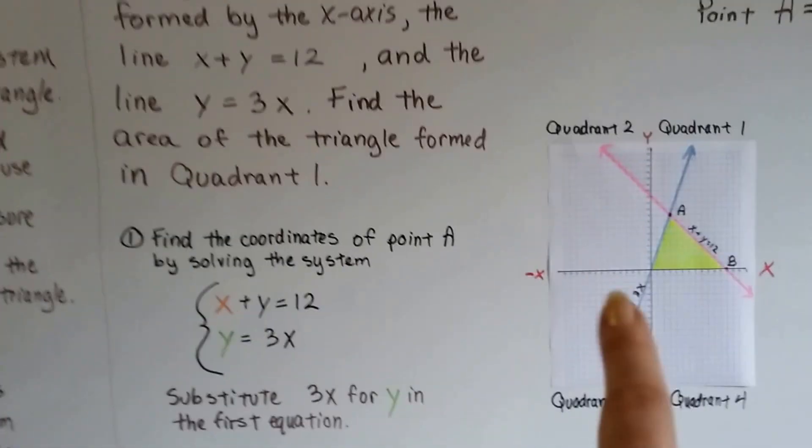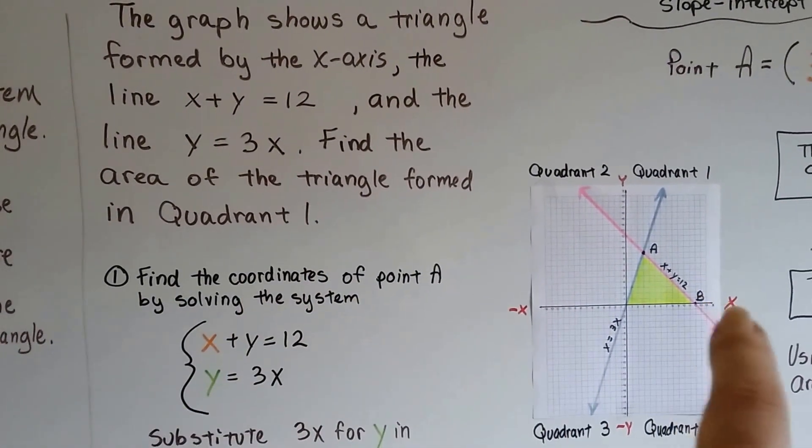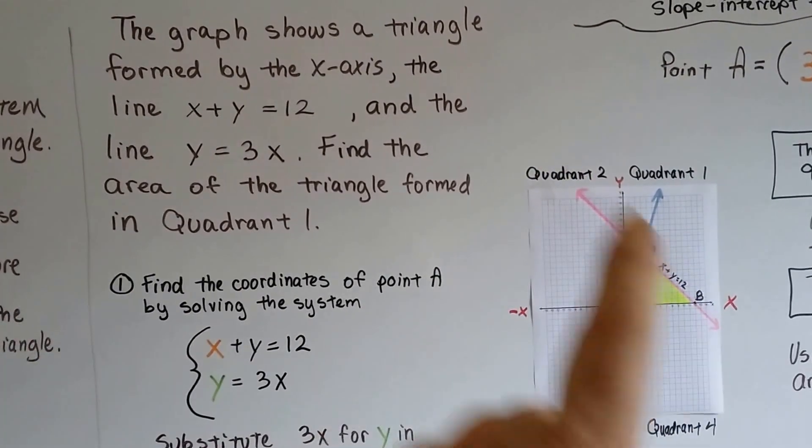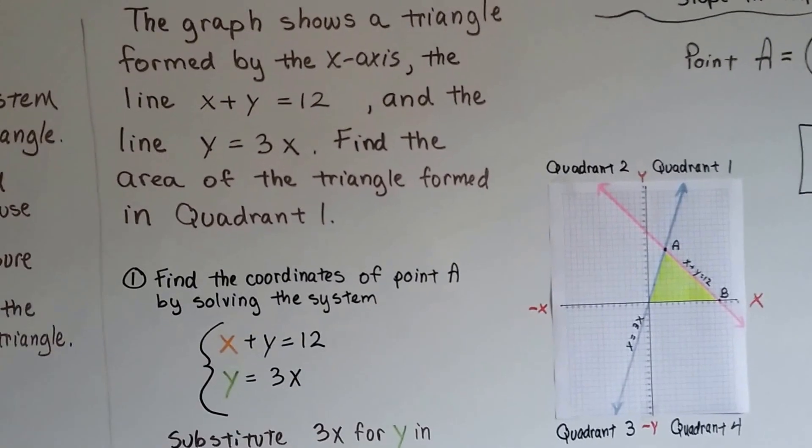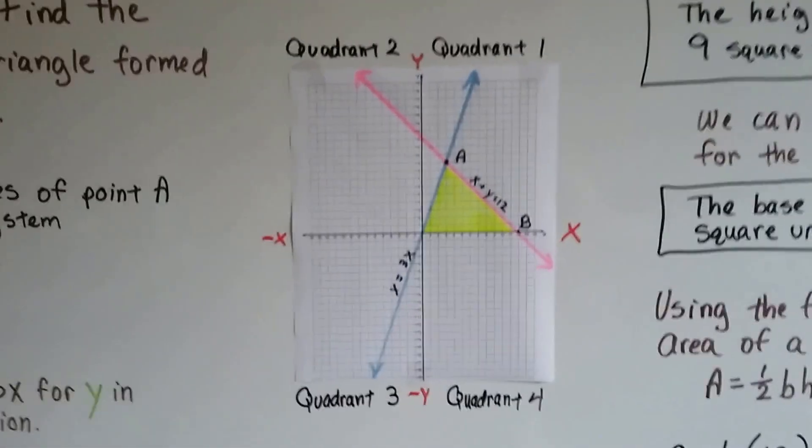So, I've got a graph here, and the graph shows a triangle formed by the x-axis and the line x plus y equals 12 and the line y equals 3x. We have to find the area of the triangle that's formed in quadrant 1.